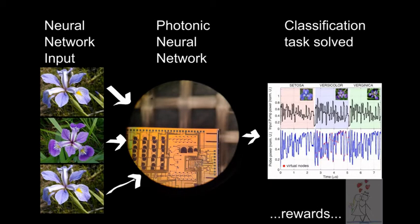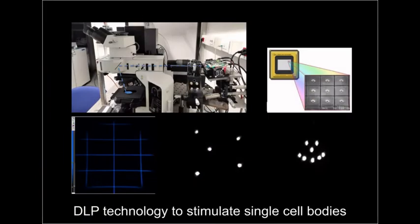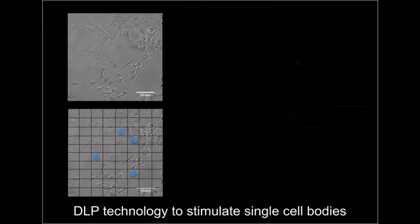On the other hand, since the possibility given by optogenetics, that is the biochemical technique that permits to control the cell activity with light stimuli, we want to use light paths to design the neuronal connection and to control the neuronal activity of the cell cultures.